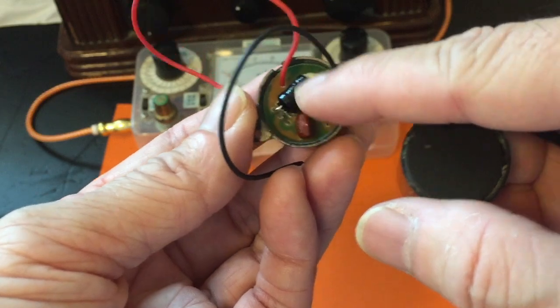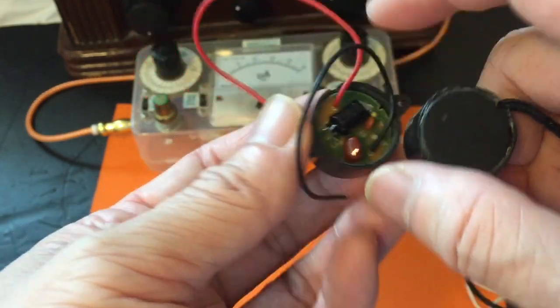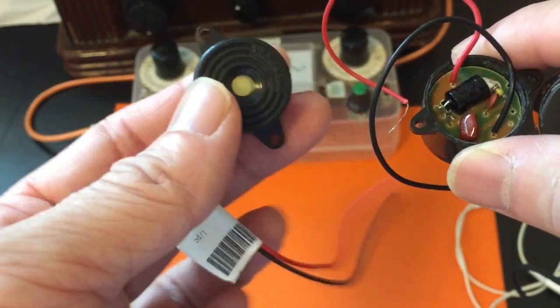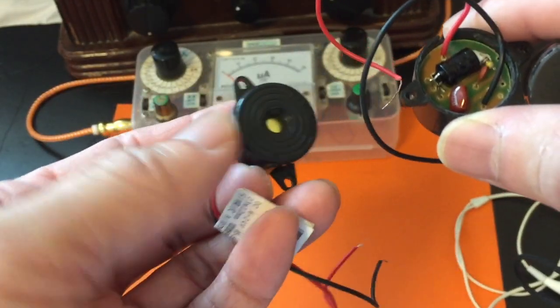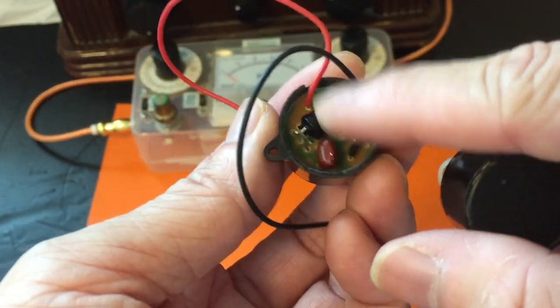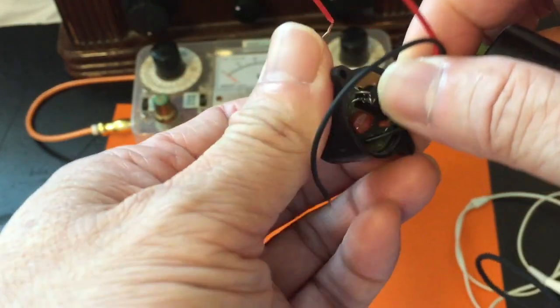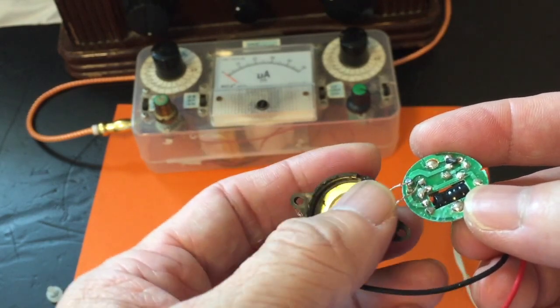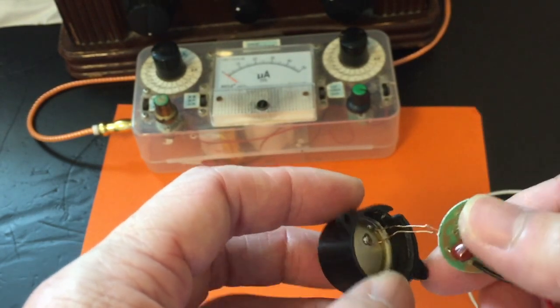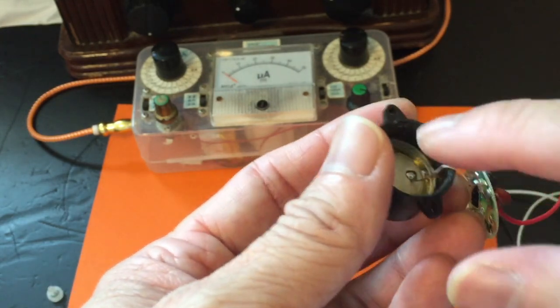But the only thing is for this one, you have to remove the components from the circuit board before you can use it as an earbud. Unlike the one on the left where you can just connect directly the black and red wire, this one you can't. You have to unsolder the component and connect the wire directly into the piezo unit, which is the metal that I'm pointing at now.